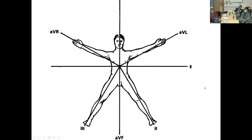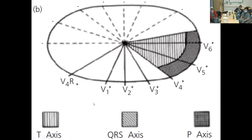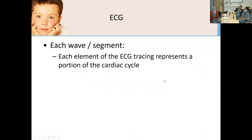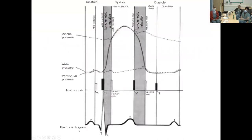In older pediatric and adult patients, we expect the axis of the QRS, P, and T waves to appear within specific normal zones. Each element of the ECG tracing represents a portion of the cardiac cycle. The ECG electrical current activates the heart, eventually leading to contraction and ejection of blood flow to the outflow tract, providing flow to the organs or lungs.